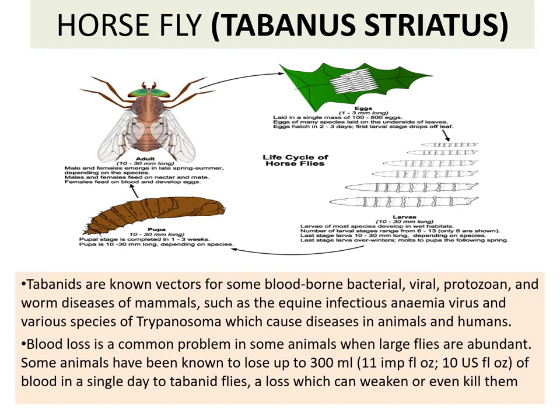The fly lays eggs, the eggs develop into larvae, larvae form the pupae, and the adult is formed. For proper reproduction, the female requires a blood meal in the case of the horsefly.